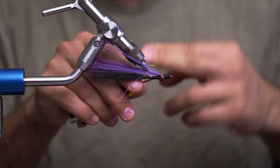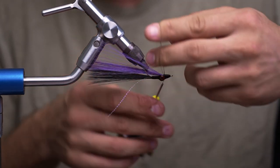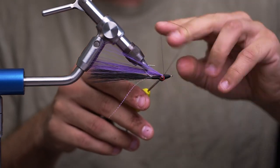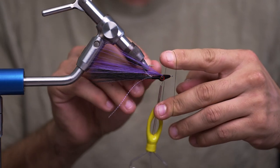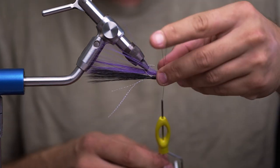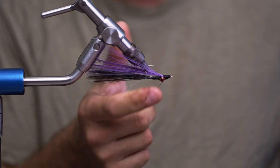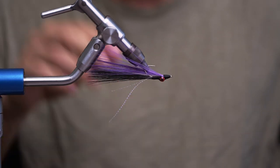So after we have that, we're going to go ahead and just put a couple whip finishes. You do end up with a pretty thick thread head, which I know some people really don't like. To me, it's totally okay. I mean, this is a really durable fly. You can catch multiple fish, like I said, and not worry about it.